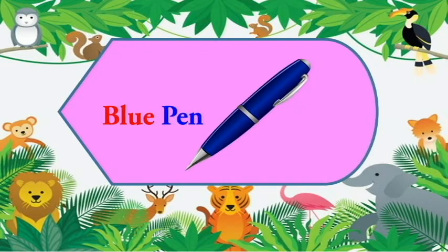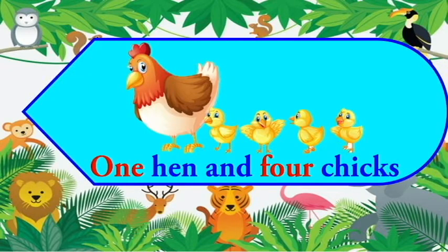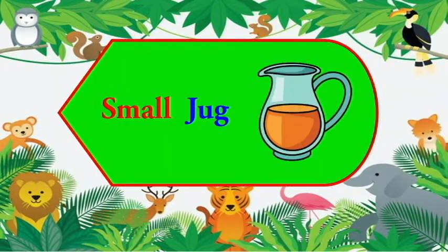Now let's look at some examples. Here in these examples, the words in red are adjectives. Blue pen — here blue is the adjective. One hen and four chicks — here there are two adjectives: one and four. Small jug — here small is the adjective.